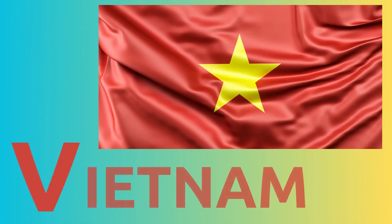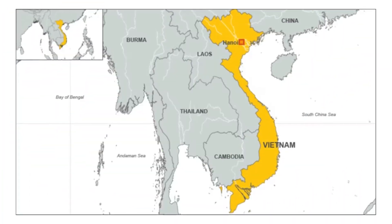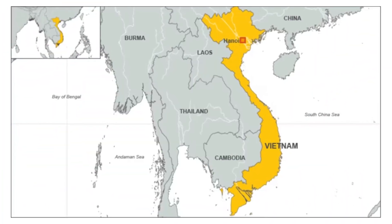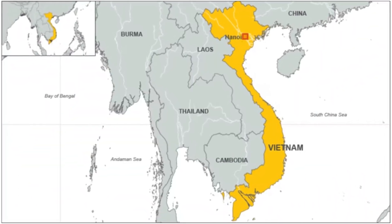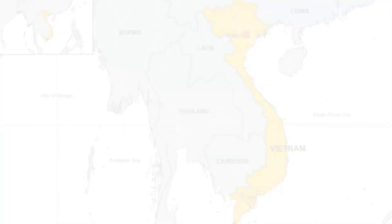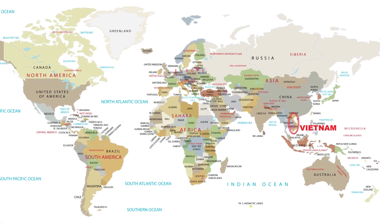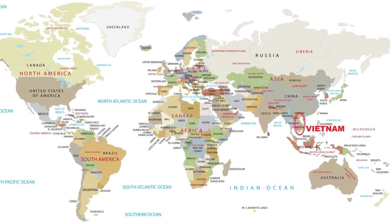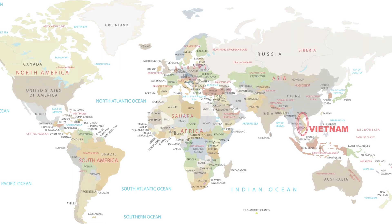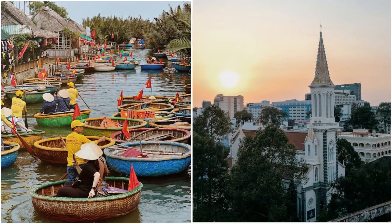V. V for Vietnam. Official name: Socialist Republic of Vietnam. Vietnam has the world's largest cave. Like India, the lotus is also Vietnam's national flower.